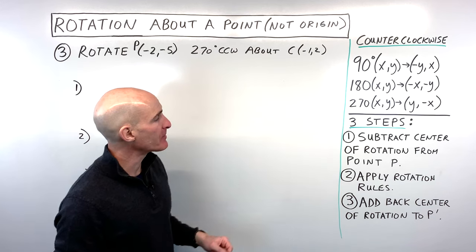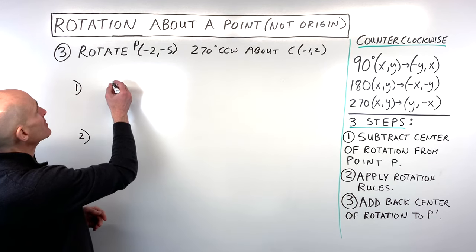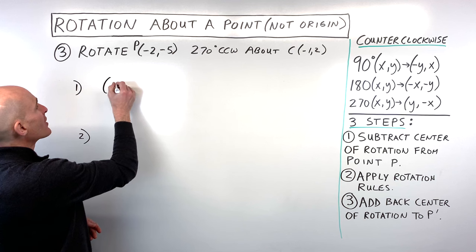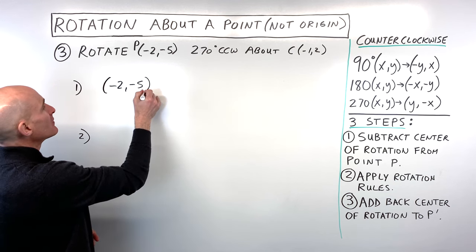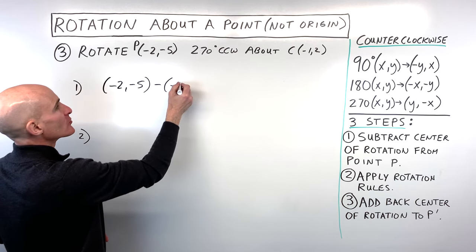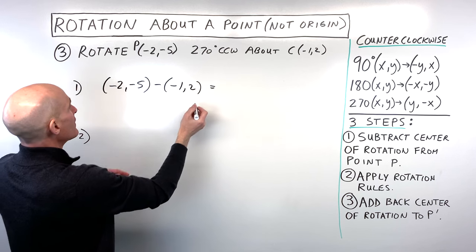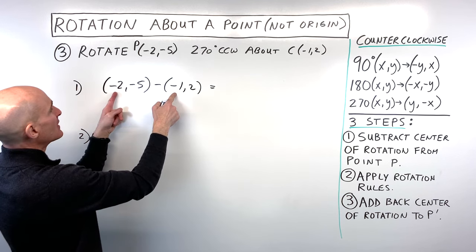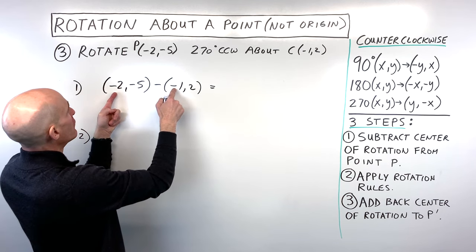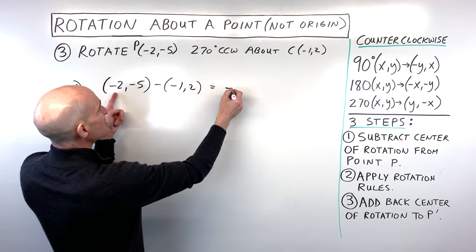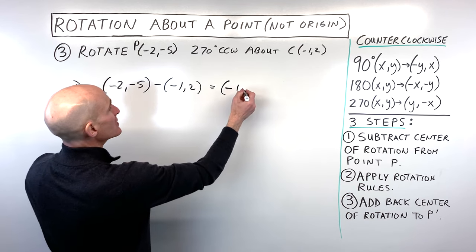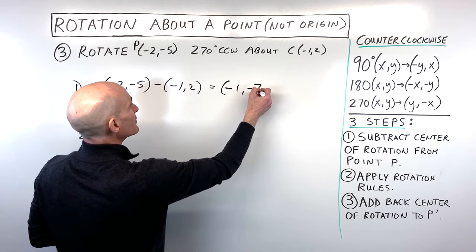Step 1: subtract the center of rotation from the point. We start with (-2, -5) and subtract (-1, 2). That's -2 minus -1, which is like -2 plus 1, so that's -1. And -5 minus 2 is -7.